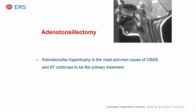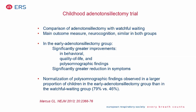Because adenotonsillar hypertrophy is the most common cause of OSA, adenotonsillectomy remains the primary treatment. One study — a randomized trial comparing adenotonsillectomy with watchful waiting — found the main outcome of neurocognition was similar in both groups, so adenotonsillectomy wasn't very helpful for neurocognition but was very helpful in improving behavior, quality of life, and polysomnography. There was also a greater reduction in symptoms, though surprisingly 46% in the watchful waiting group also showed some improvement.